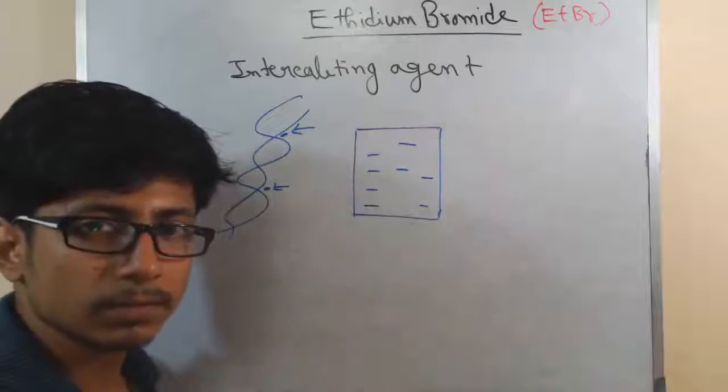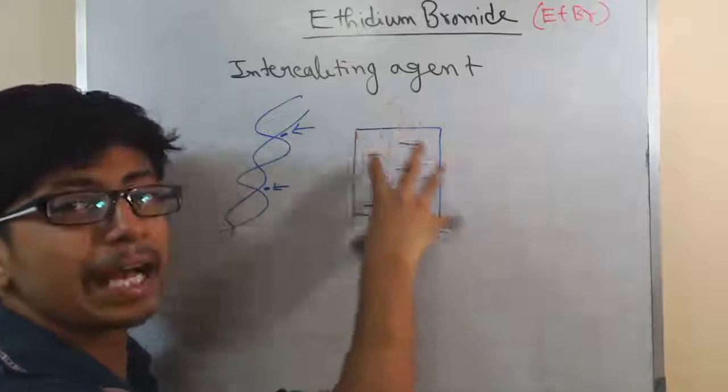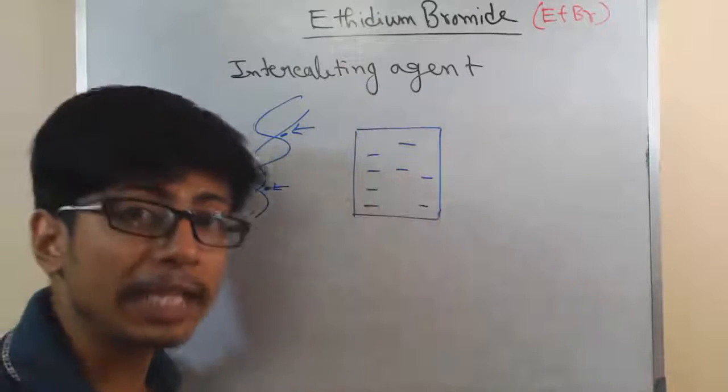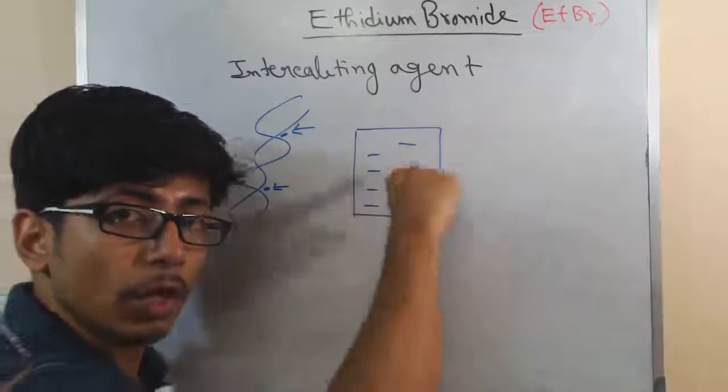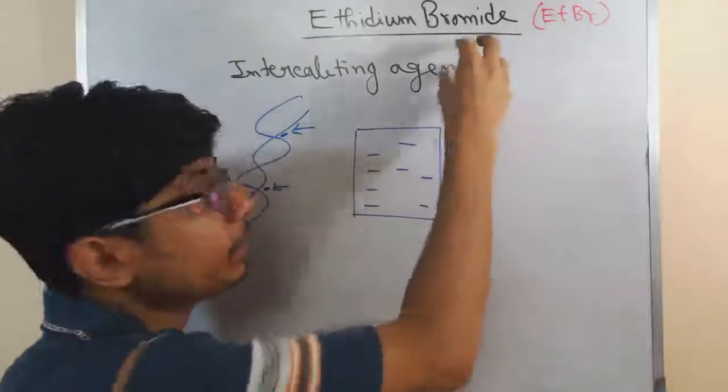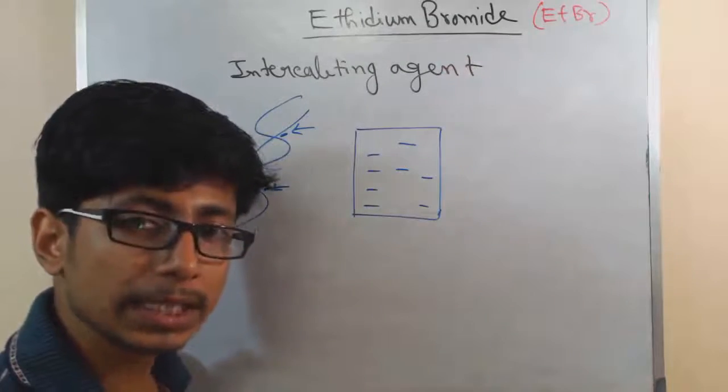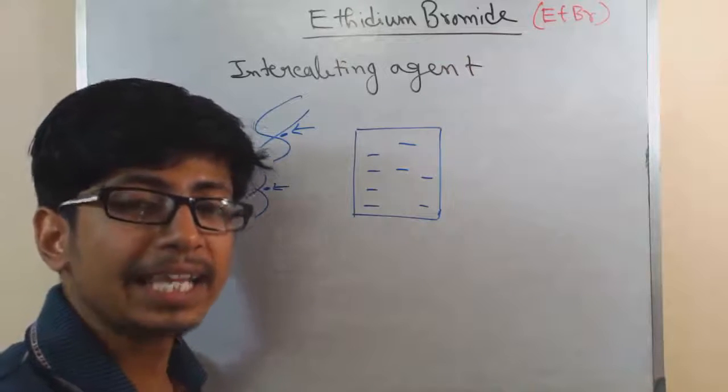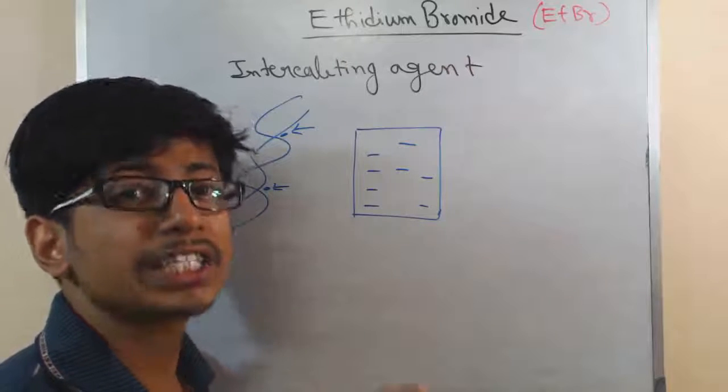After this process is done, when we expose this whole agarose gel to UV light according to the rule of fluorescence, ethidium bromide receives UV light, gets excited, and emits orange color.